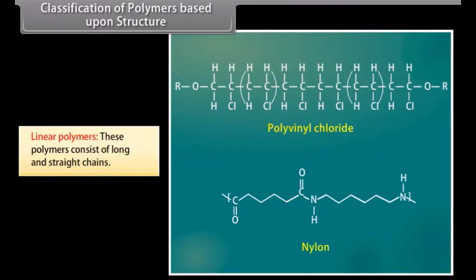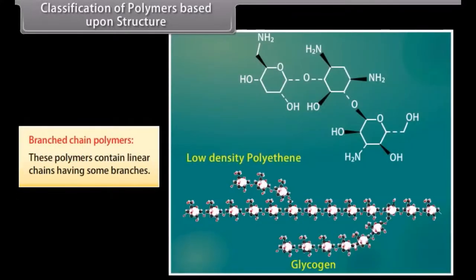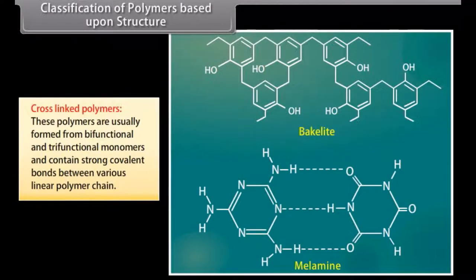Classification of polymers based upon structure has three subcategories. Linear polymers consist of long and straight chains — for example, polyvinyl chloride and nylon. Branched chain polymers contain linear chains having some branches — for example, low-density polyethene and glycogen. Cross-linked polymers are usually formed from bifunctional and trifunctional monomers and contain strong covalent bonds between various linear polymer chains — for example, Bakelite and melamine.